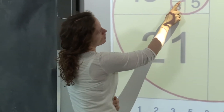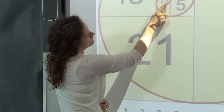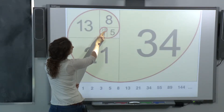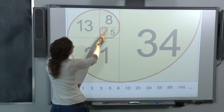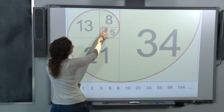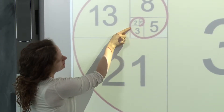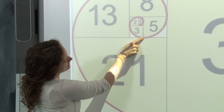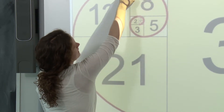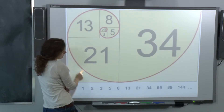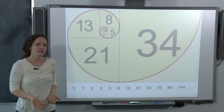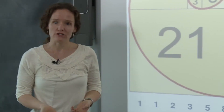If you start in the corner of the very first square you placed and draw a spiral that goes through all of the diagonal corners — up here, down here, through the diagonal again, and so on — you'll get a spiral called the Fibonacci spiral.